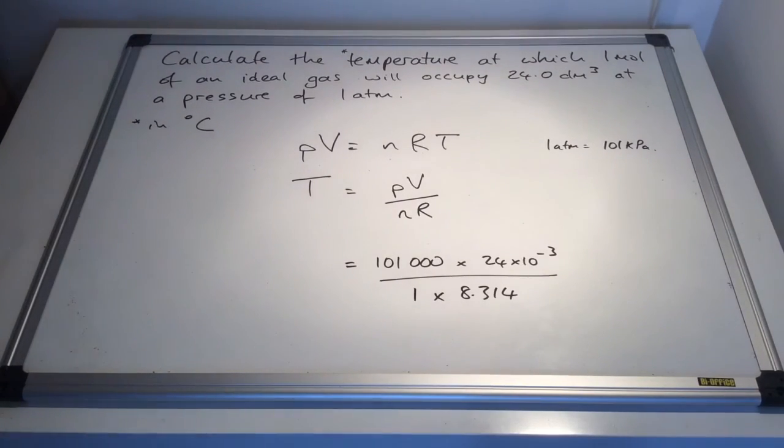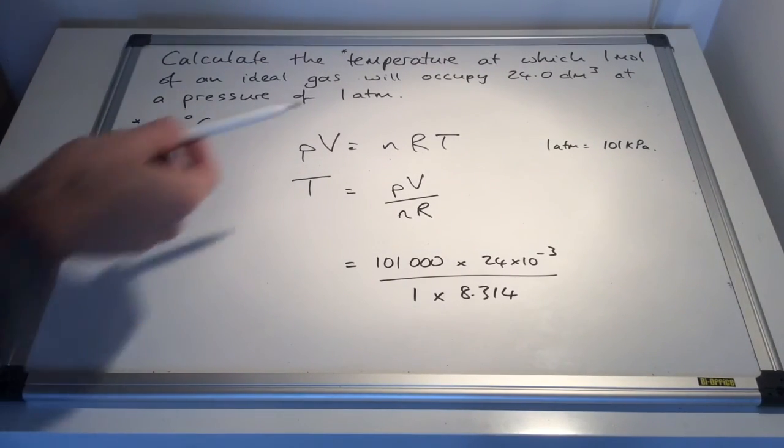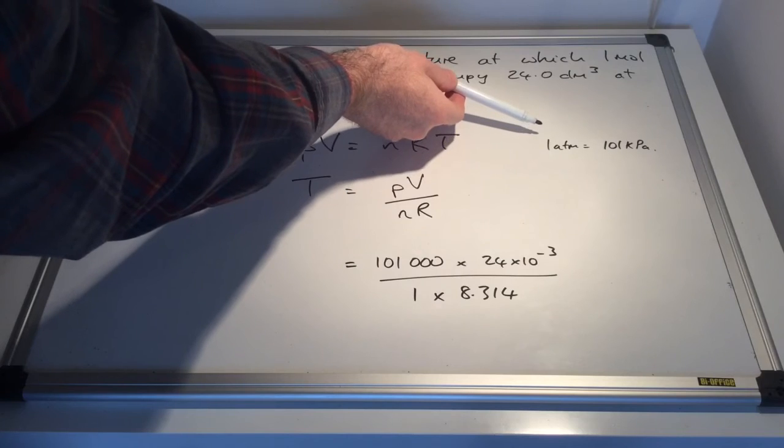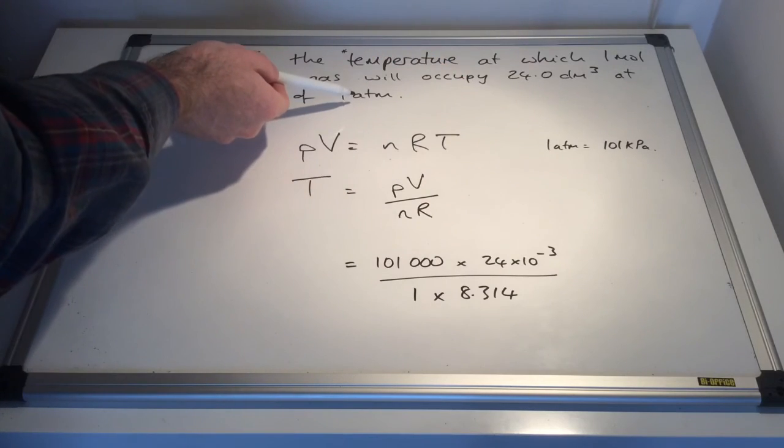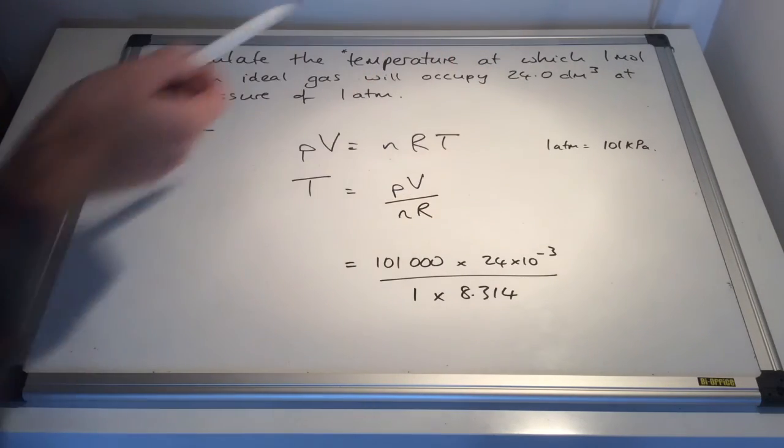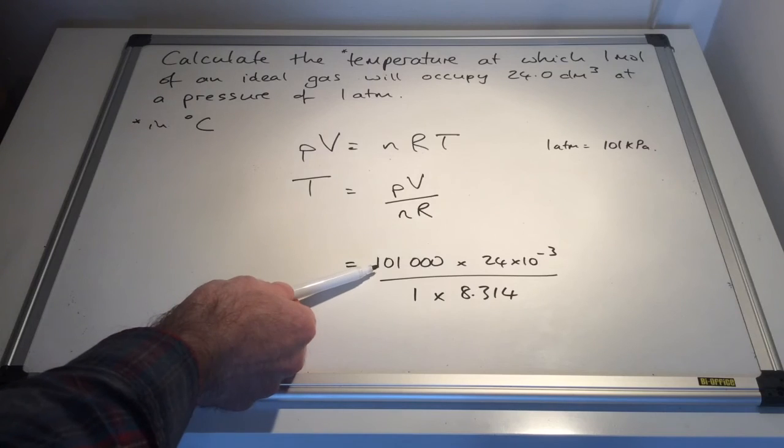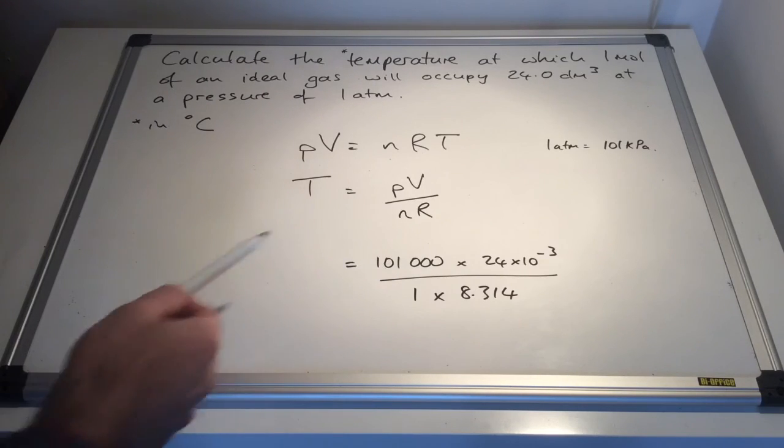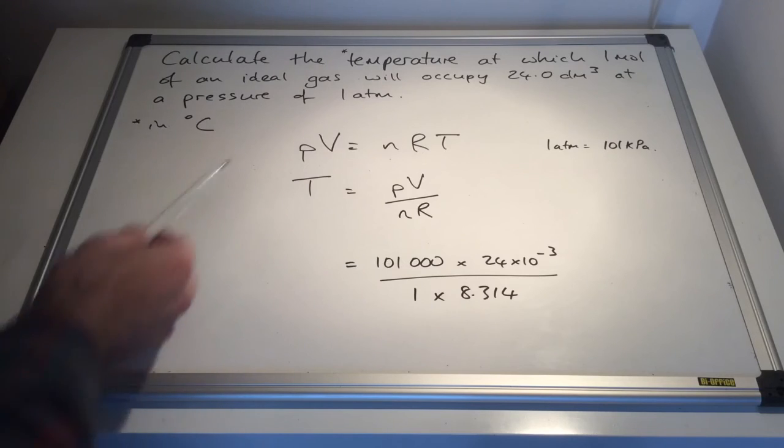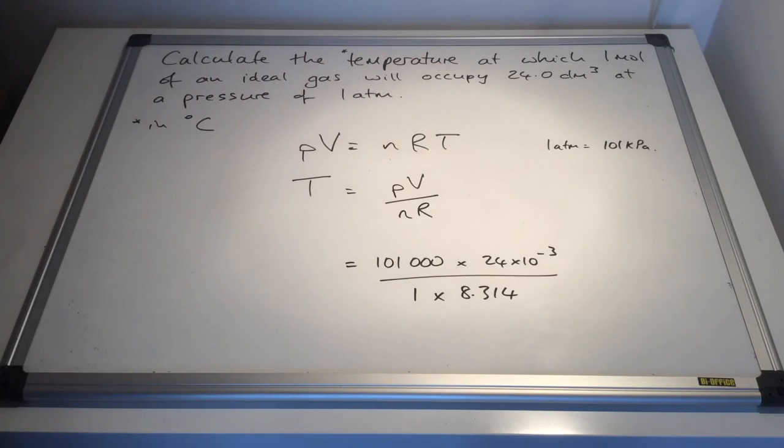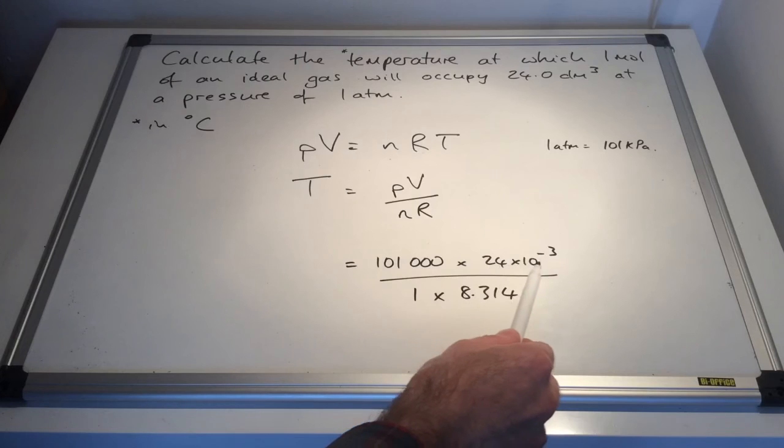So you can see I've put all the numbers in there. I've just written up the side there, this reminder that one atmosphere, which the pressure was given in, one atmosphere is 101 kilopascals. But remember, we've got to use pascals in the ideal gas equation. So there's the pressure term there, 101,000 pascals multiplied by the volume, which is 24 decimetres cubed. So there it is there with its conversion so that it's now in metres cubed.